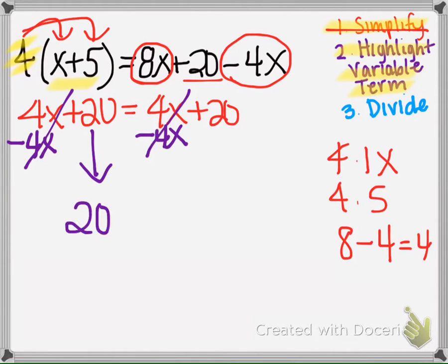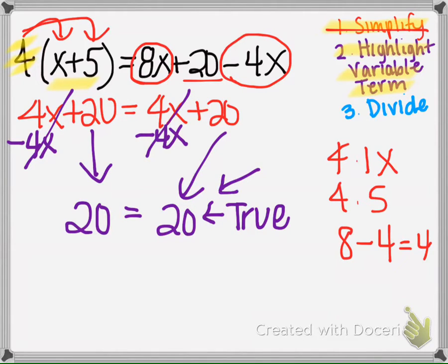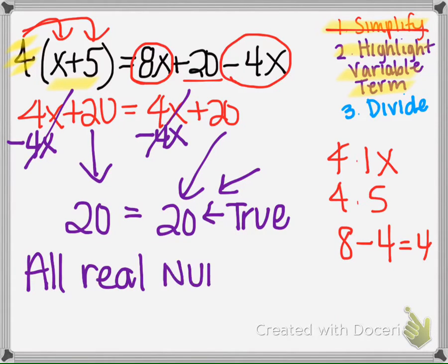So when that happens, I bring down the left side and the right side, and I read this. 20 does equal 20, that's true. So the answer, because we get this, this tells us that the answer is all real numbers. That means any number can be plugged in for x, and it will make both sides equal.